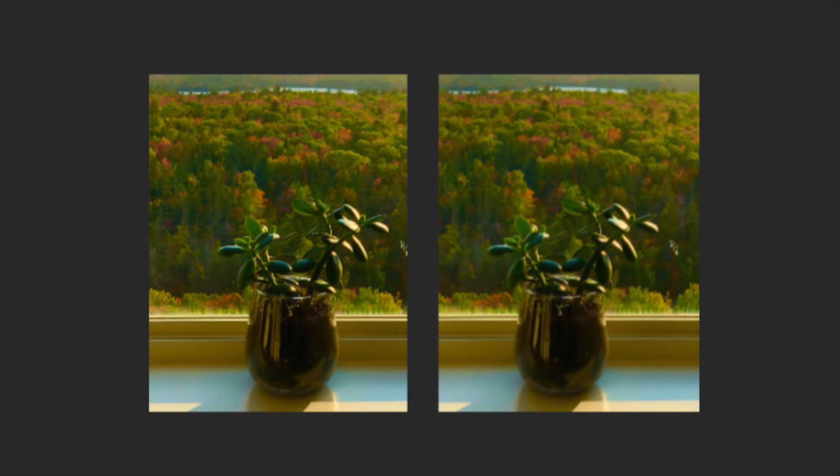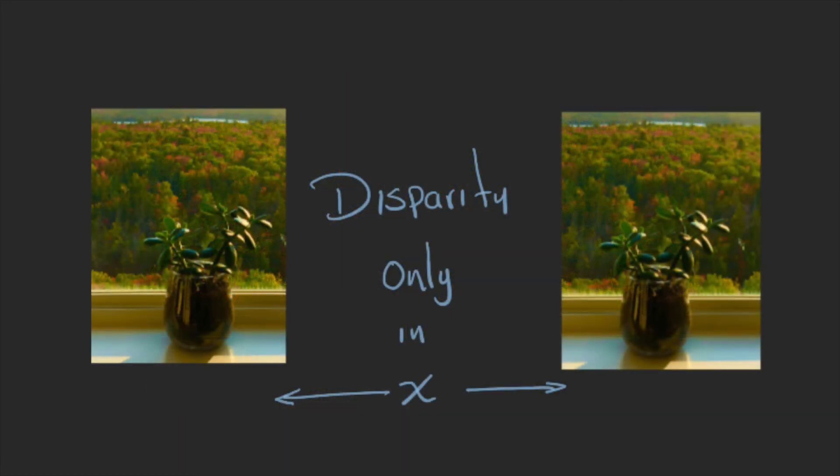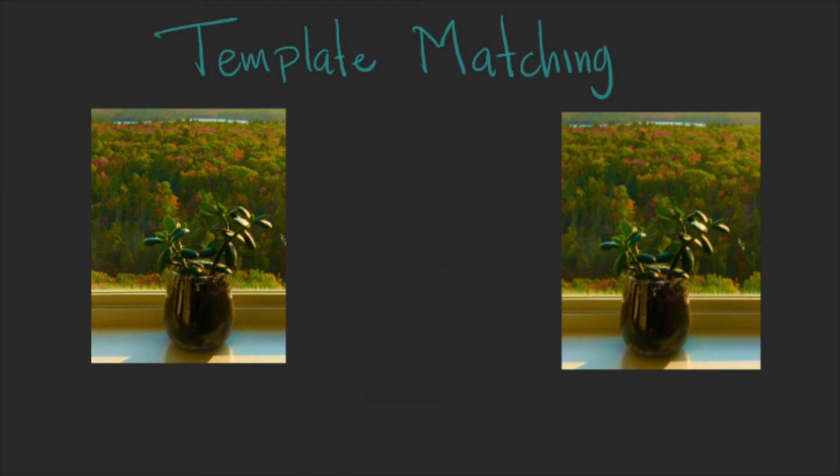You have two images, and the first step is to find the correspondence between the points on each image. We can use a variety of methods here, but because we are using the simple configuration, we know that the difference between the two images is only on the x-axis. Therefore, we can use template matching to find the points by looking at rows.